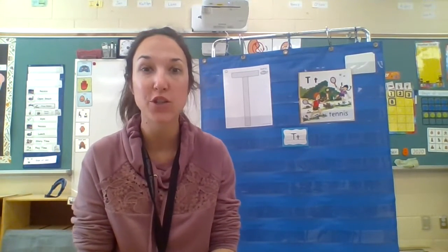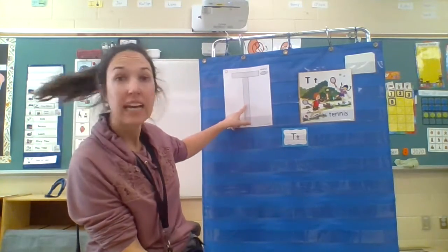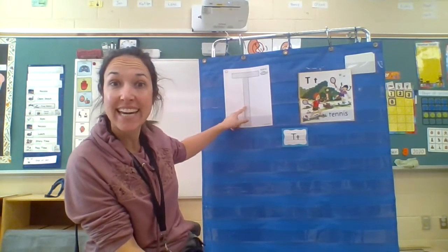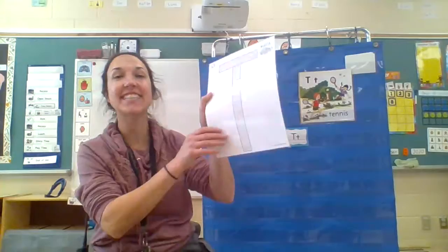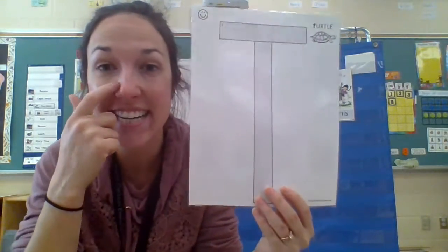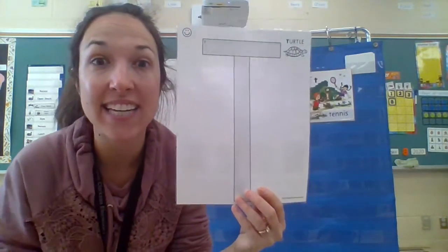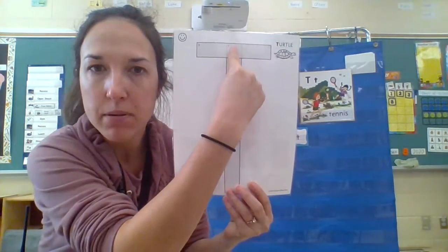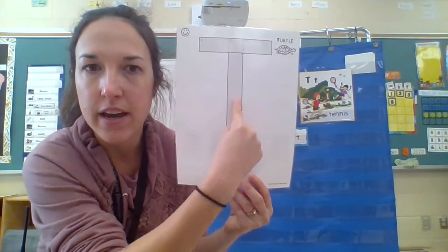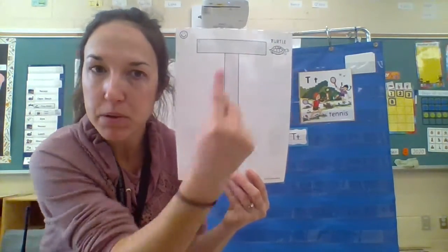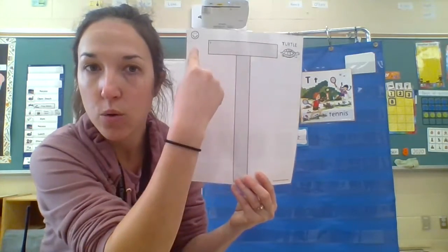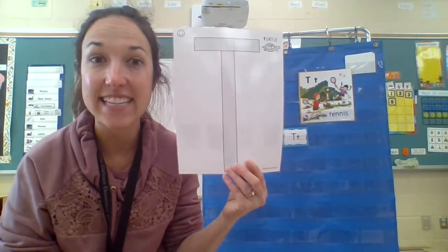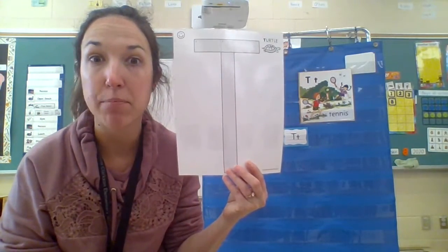Hi my friends! So for our language letter study this week, we are doing the letter T. T-T-T-T. The T is very easy to make because you take your pointer finger, you start at the top, go down, then you jump and go across. Very easy to make the capital T.